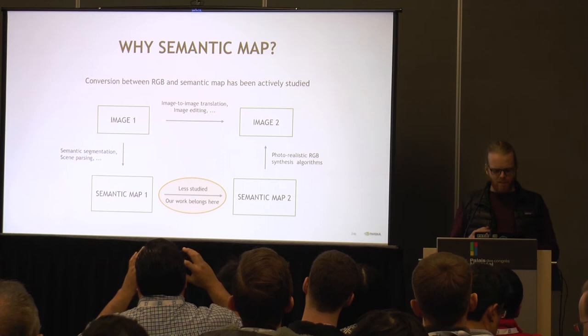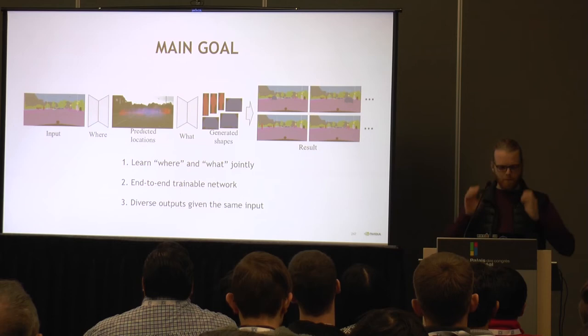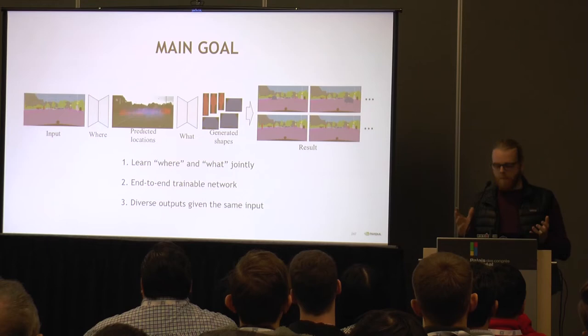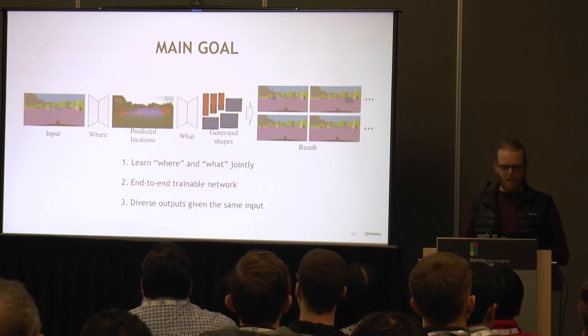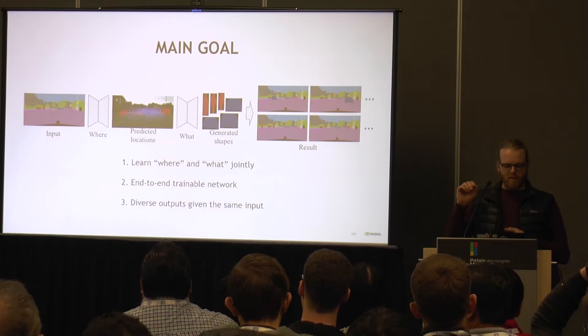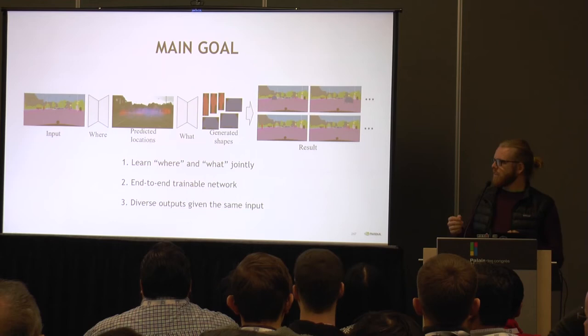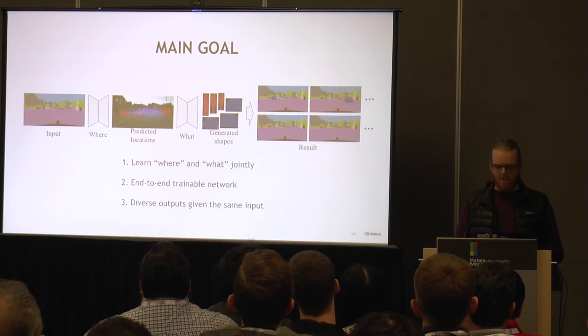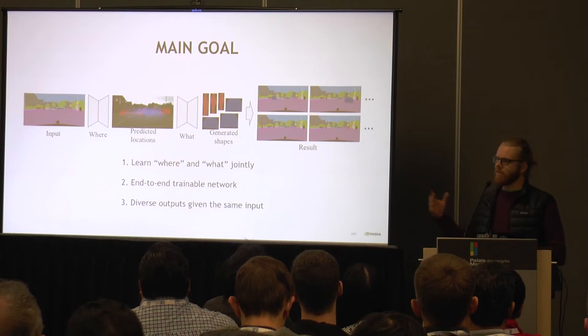Here's an overview of the architecture. We get our semantic map, and then what we want to do first is figure out where we're going to put an object. We have a model for the cars and a model for the pedestrians. We figure out with a 2D bounding box where we want to put it. Then, given a bounding box, we want to define the silhouette of the object. And we want this neural network to be trainable end-to-end, so the gradient can flow from the output all the way back to the input.